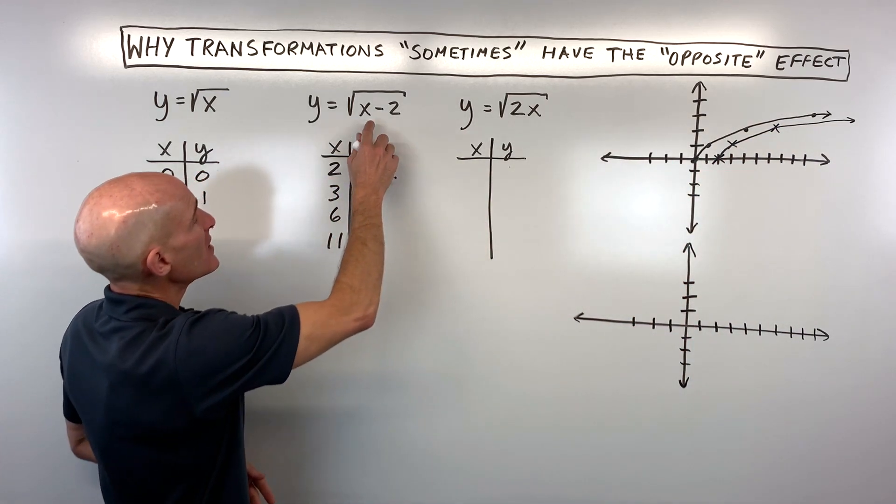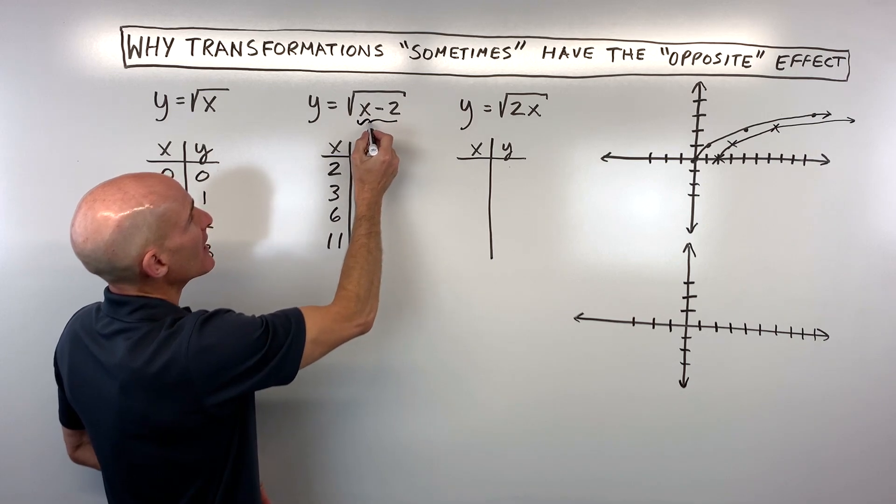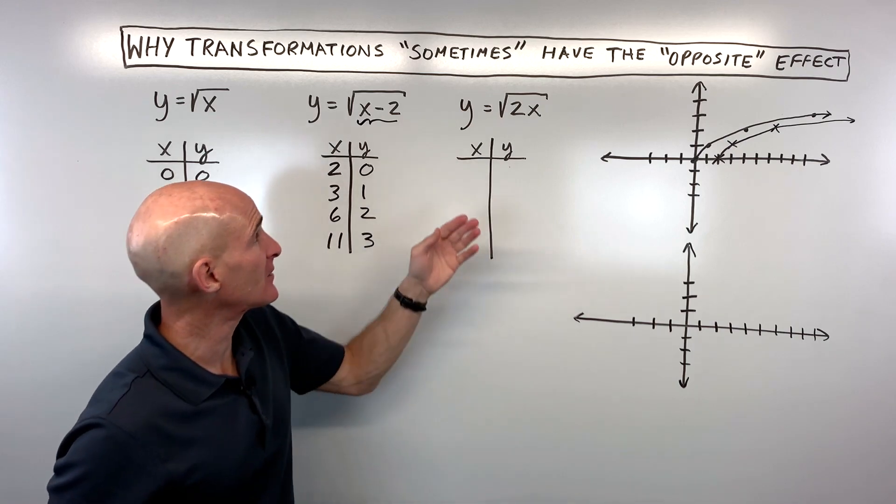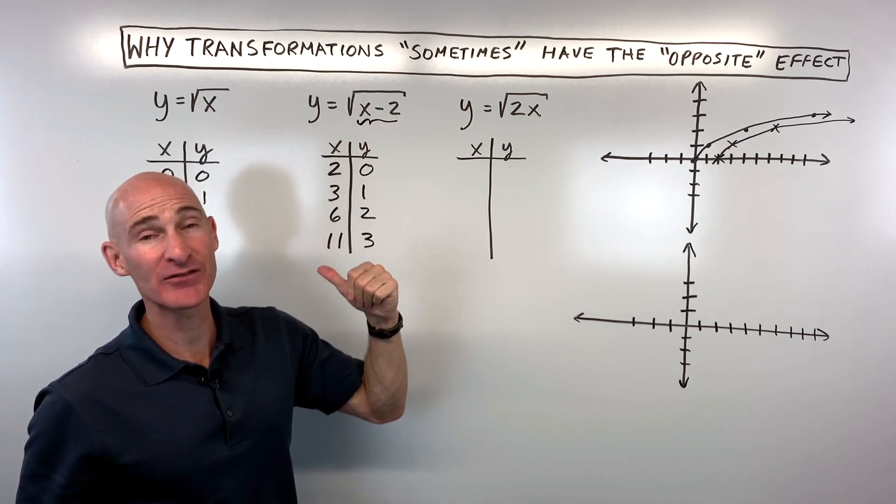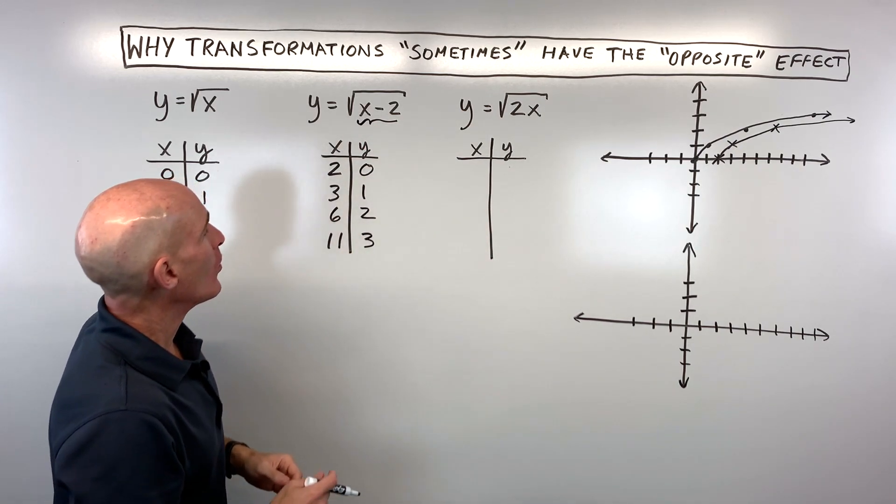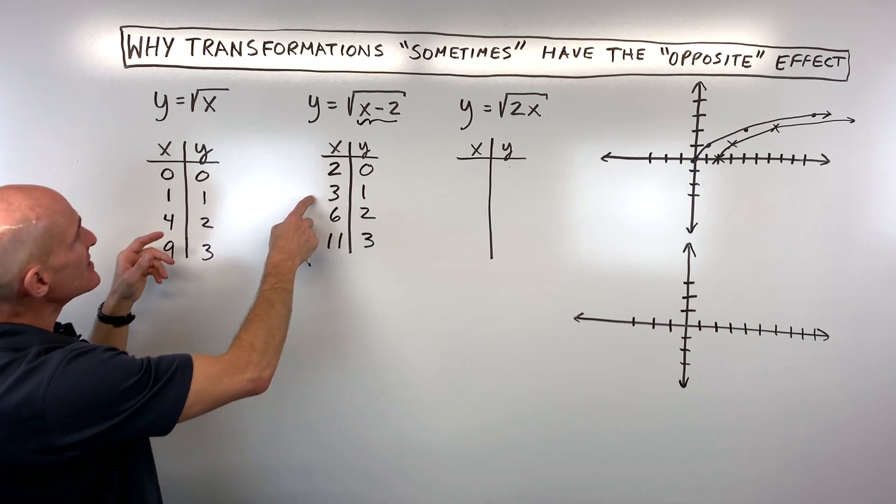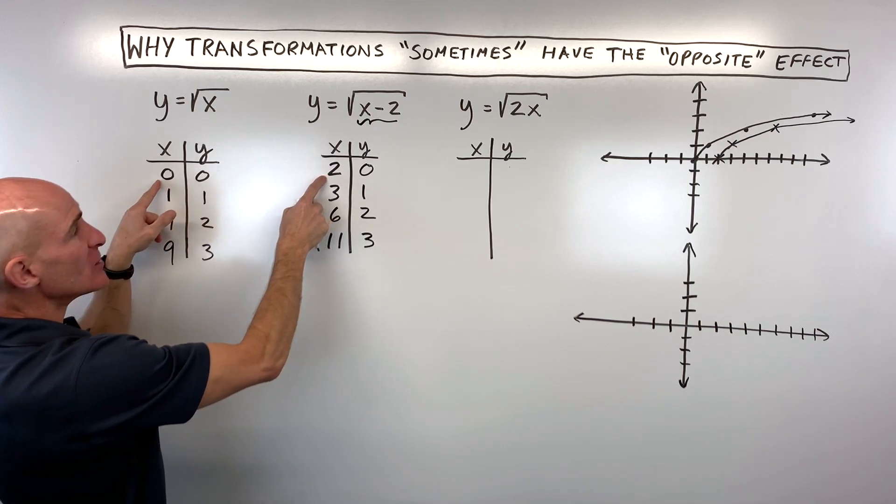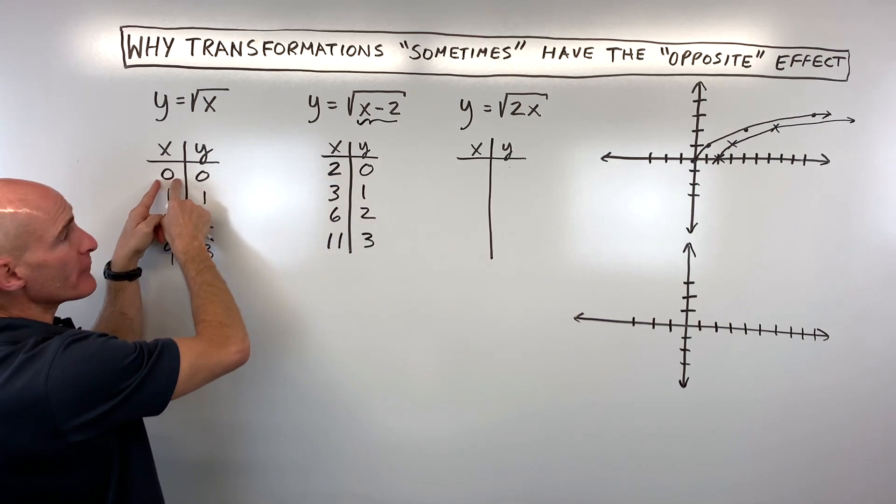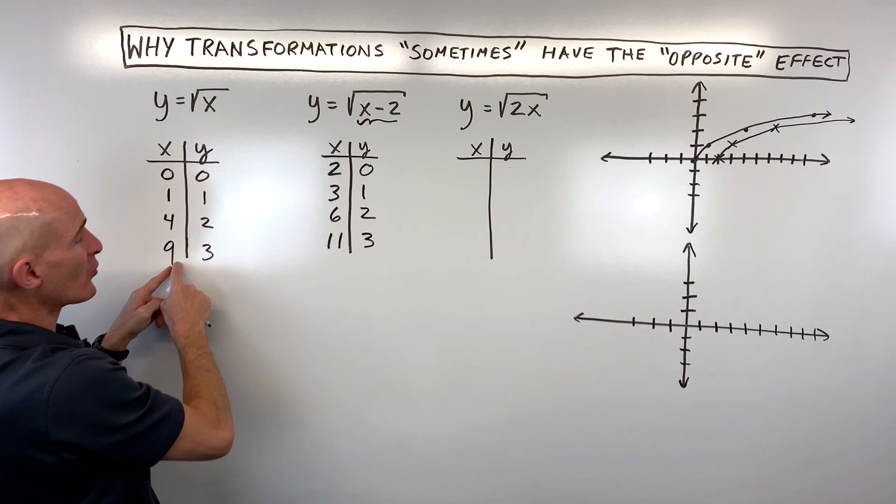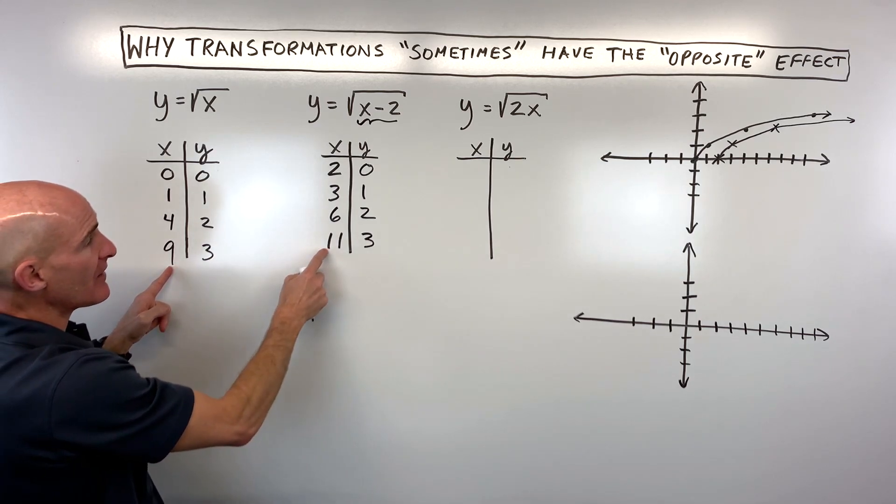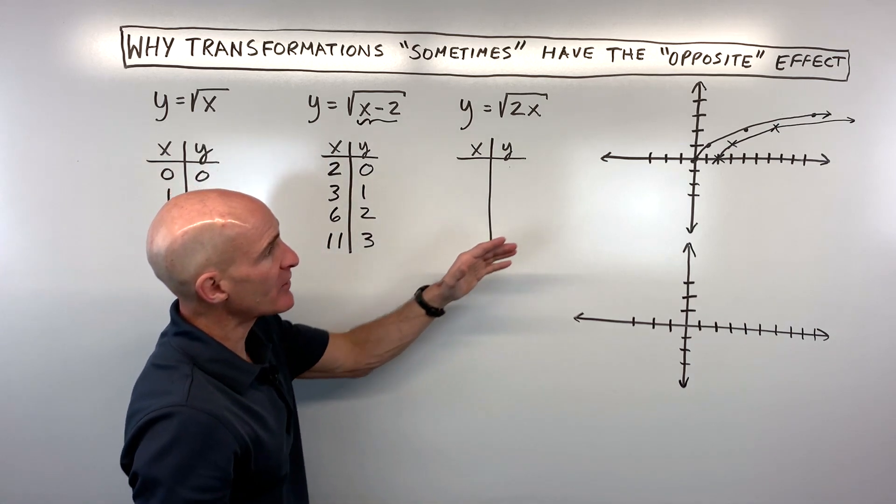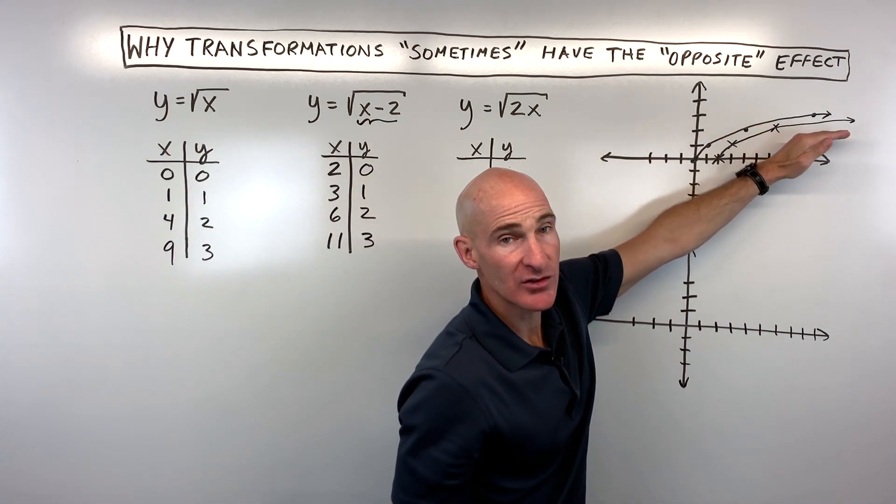But when you look at the equation, you might be saying, "It's x - 2. Why is it shifting to the right 2? Why is it having that opposite effect of what you would think?" You'd think minus 2 would be left 2, right? If you look at the table, you can see that in order to get an output of 0, the x value had to be 2 more than in the parent function. Same thing here: to yield an output of 3, the x value had to be 2 units more. That's why the graph is shifting to the right 2.